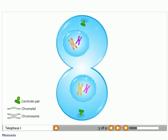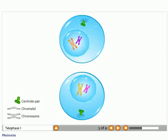The membrane forms around the new nuclei and two new cells are created. The new cells contain half the number of chromosomes as the parent cell, but each is double-stranded.